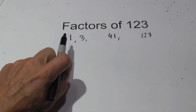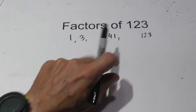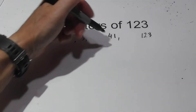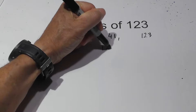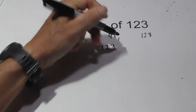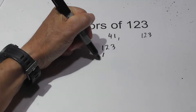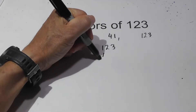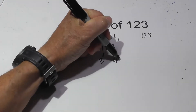And in pairs it's 1 times 123 and 3 times 41. Now to find the prime factors: 2 will not go into it, so I'm going to begin with 3 times 41.